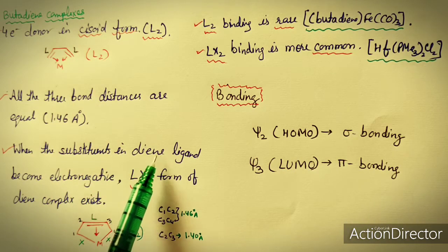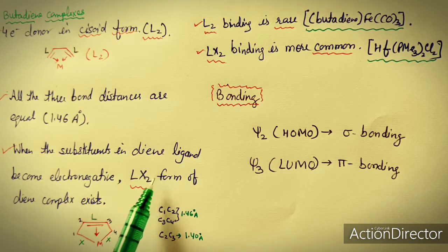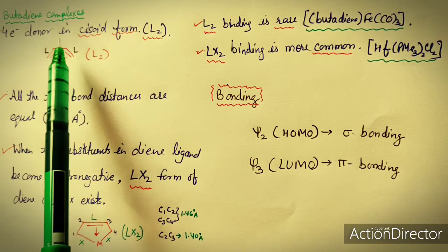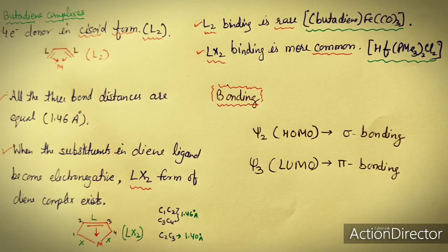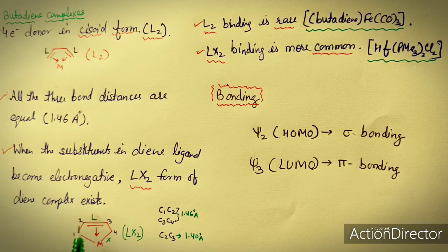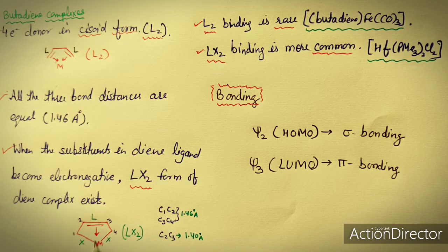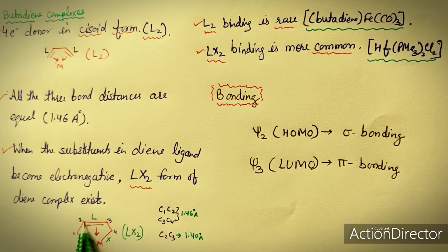When the substituents on the diene ligand become electronegative, the LX2 form of diene complex exists. More back bonding will occur because the metal center can donate more electrons to the butadiene. The substituents attract electrons from the metal center, so more back bonding takes place and the C2–C3 bond length will decrease.